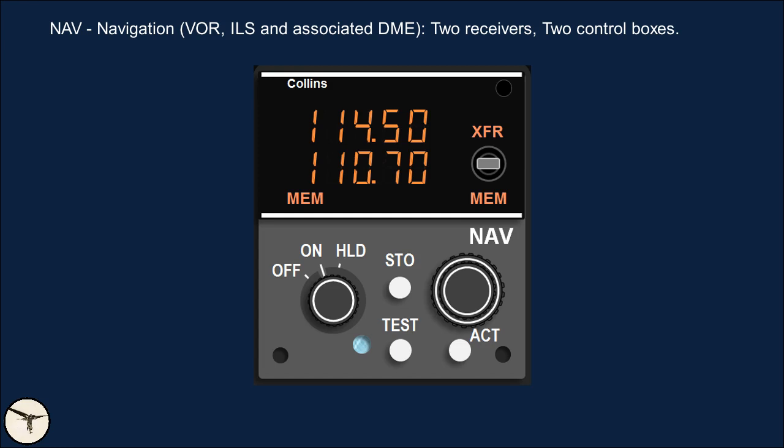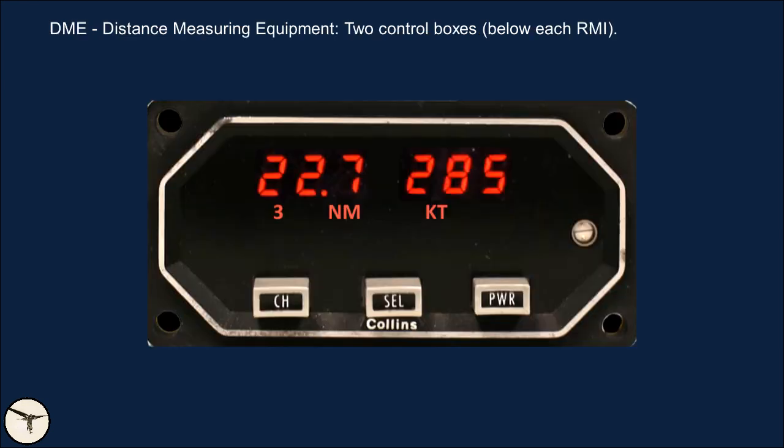The NAV control box is located on the glareshield and is used to tune VOR and ILS and their associated DME. Operation is very similar to the VHF radios, but it can store only four frequencies. The hold position maintains the current DME frequency before switching to another navigation frequency. Some aircraft have separate DME control boxes with three channels: DME number one, DME number two, and the DME on the standby frequency set in the NAV control box — captain side for NAV1 standby, first officer side for NAV2 standby.